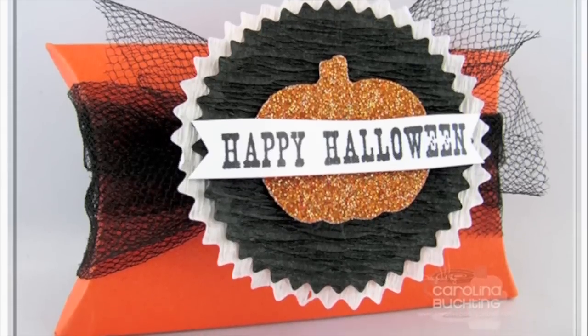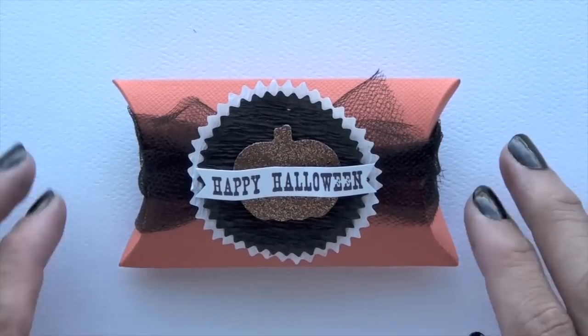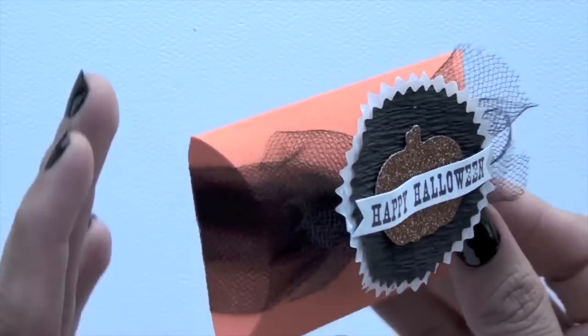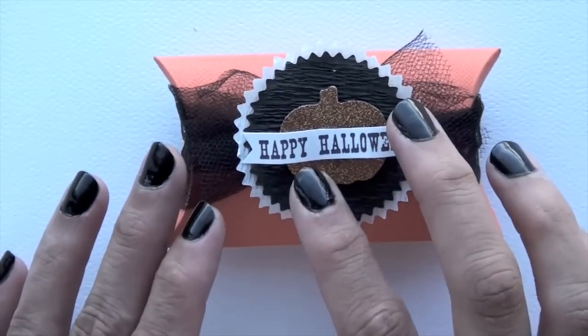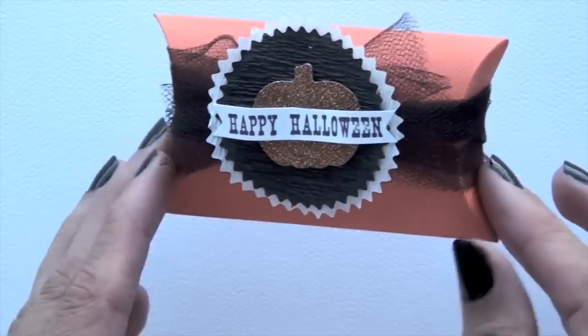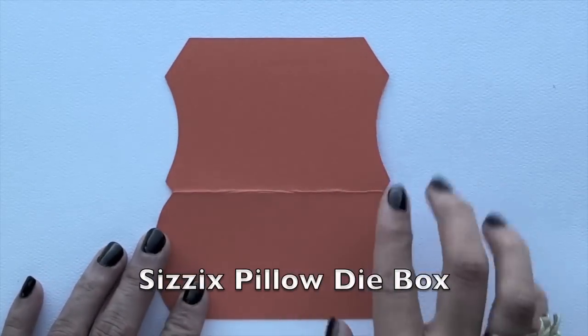Hi everyone, this is Carolina. Today I'm going to be showing you how to put this pillow box treat holder together. It comes together quite easily with a die that you just use to cut out the actual shape and then a tool to tie everything together and it's ready for you to put small treats into it. So let's go ahead and get started.